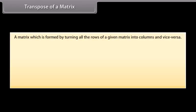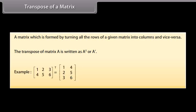Transpose of a matrix: A matrix which is formed by turning all the rows of a given matrix into columns and vice versa. The transpose of matrix A can be written as A'. For example, the transpose of matrix A with 1st row [1, 2, 3] and 2nd row [4, 5, 6] is the matrix with 1st row [1, 4], 2nd row [2, 5], and 3rd row [3, 6].